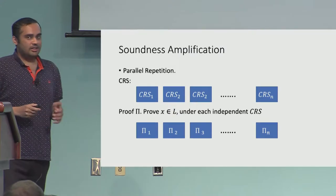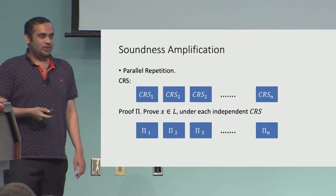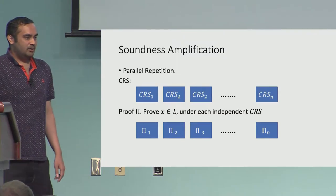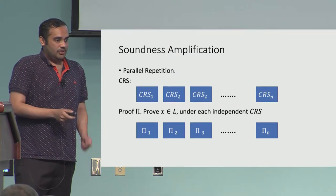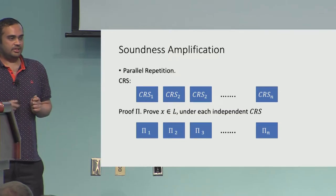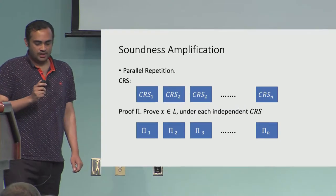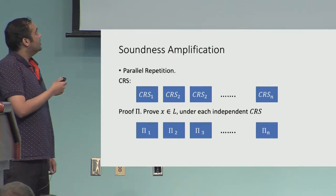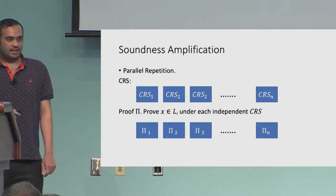The first transformation is soundness amplification. As you might expect, you increase soundness by repeating in parallel — this has been studied historically. What we do is have the CRS generation sample N independent copies of the CRS using the underlying NIZK. Then to prove a statement X, using each copy of the CRS you generate an independent copy of the proof for the same statement X. That's your proof.